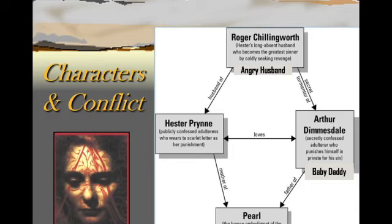How do these characters tie together? We start with Hester Prynne, who publicly confessed her adultery and wears the Scarlet Letter as her punishment. She and Arthur had a love affair, and Arthur secretly confessed his adultery and punishes himself in private for his sin — he doesn't tell anybody else. However, Roger Chillingworth figures out his secret torment, as he and Arthur are living together for quite some time. Arthur, living with his sin, is becoming more physically weak.